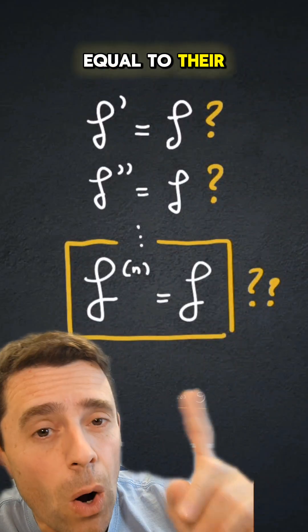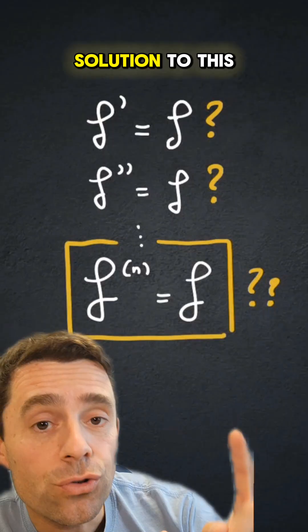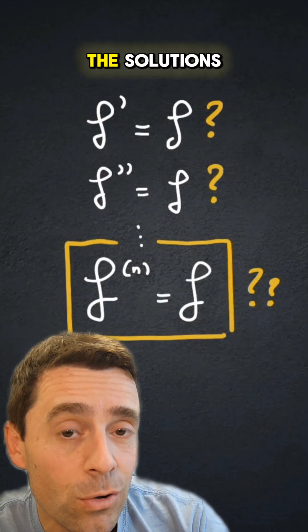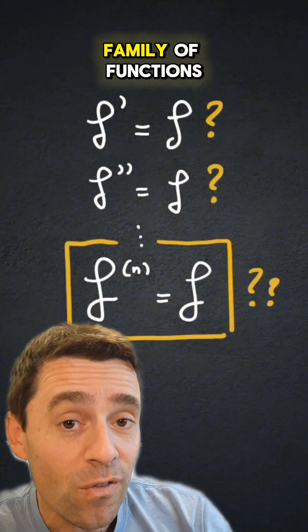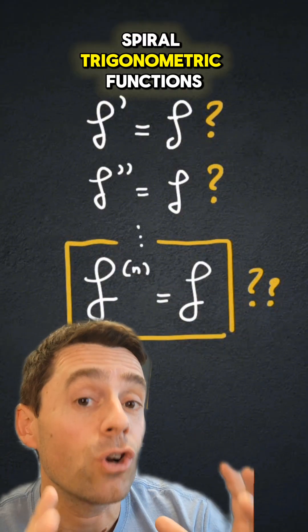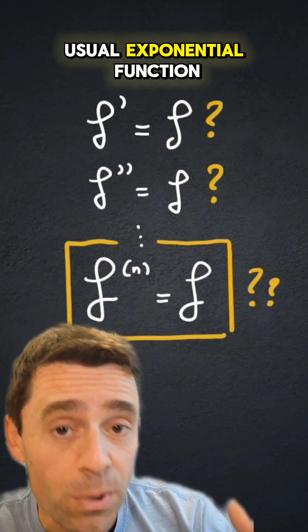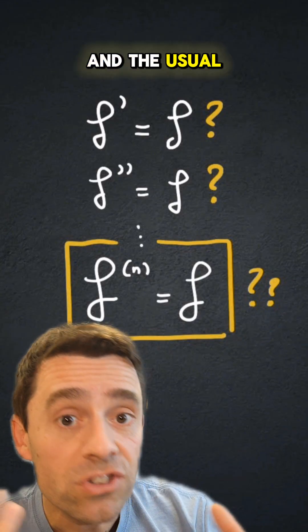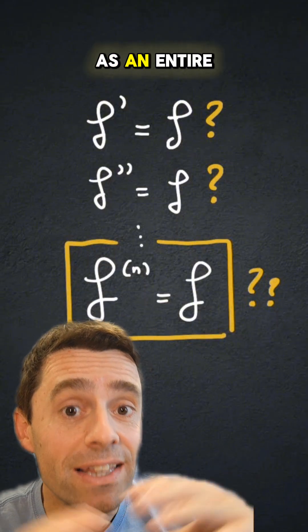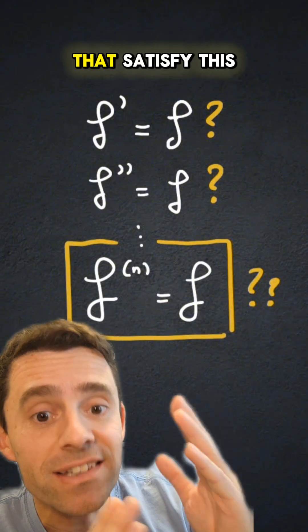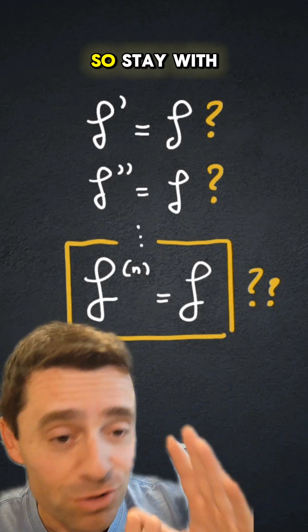What functions are equal to their own nth derivative? In this video I'm going to find the solution to this problem and describe all the solutions. In doing so, I'm going to describe a family of functions that I'm going to call the spiral trigonometric functions that generalize the usual exponential function and the usual sine and cosine of x and put them in context as an entire family of functions that satisfy this property. I think this is really cool, so stay with me.